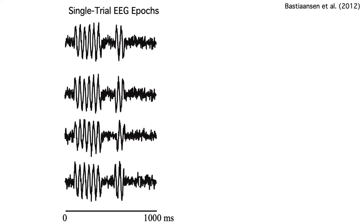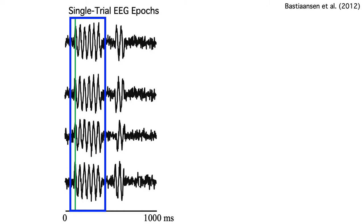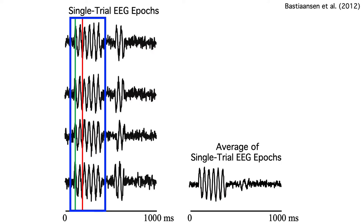On each trial, the stimulus elicits two alpha-band bursts. The first burst is phase-locked to the stimulus. On every trial, we get positive peaks at consistent times and negative peaks at consistent times. So when we average the trials together, we can see the alpha burst in the average with the same positive and negative peaks.